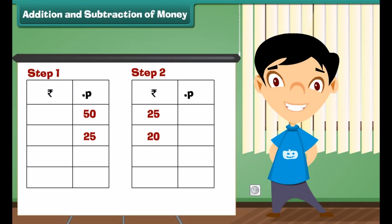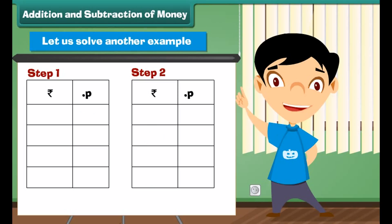Now I have 3 fifty paise coins and a 2 rupee coin which is equal to 3 rupees 50 paise. Let us learn how to add 25 rupees 50 paise and 20 rupees 25 paise. Step 1: Add the numbers in paise column. 50 plus 25 is equal to 75 paise. Step 2: Add the numbers in rupees column. 25 plus 20 equals rupees 45.